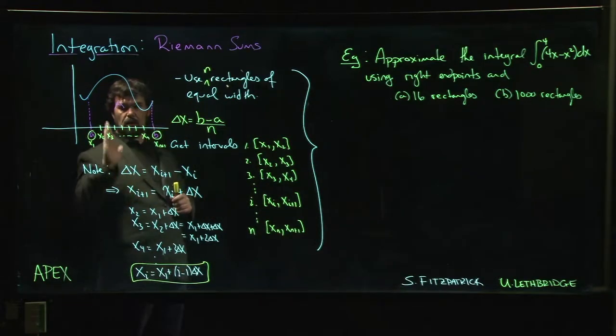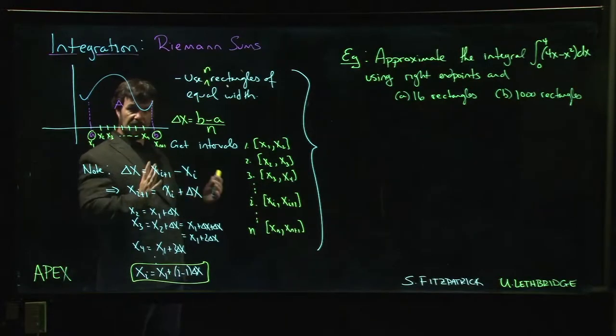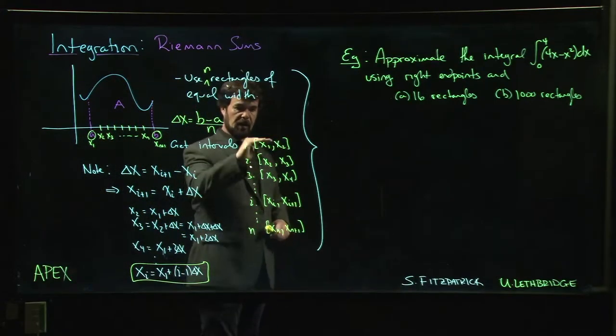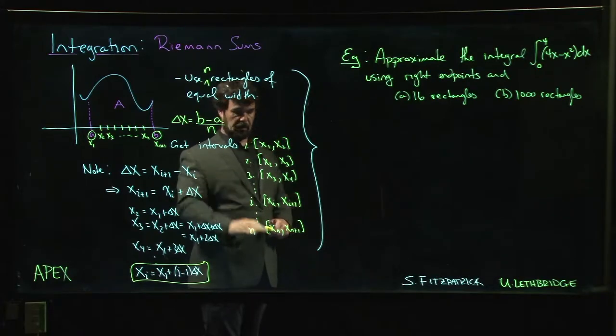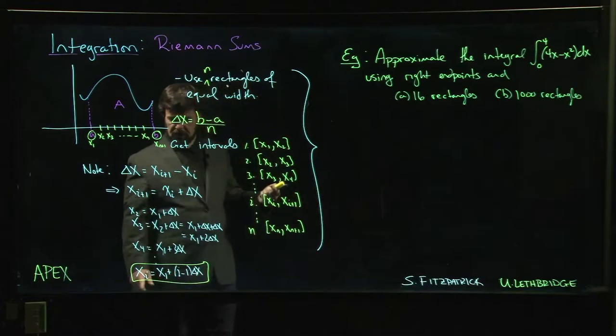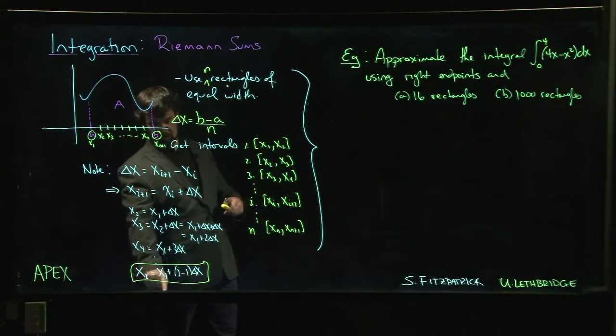All that we're ultimately doing is we're taking our big interval and chopping it up into a bunch of smaller intervals of equal length. This i that we have here is just keeping track of which one of these intervals we're in, just a sort of lookup mechanism. What's useful is that we can express the endpoints in terms of this index i, so we have this formula.